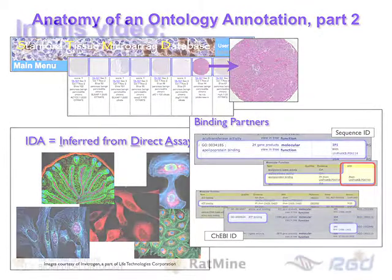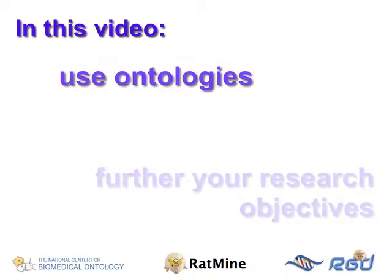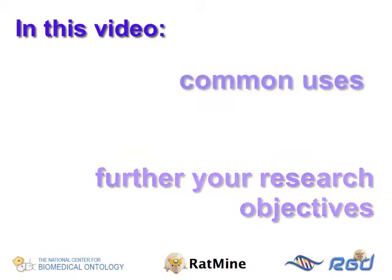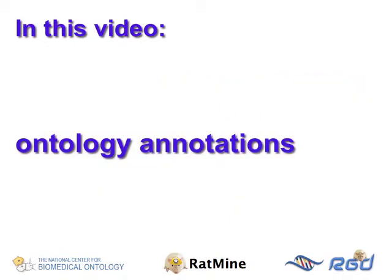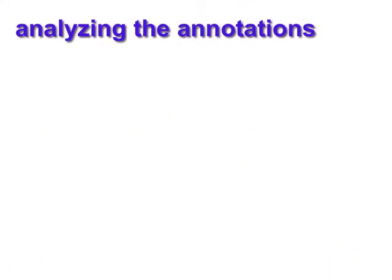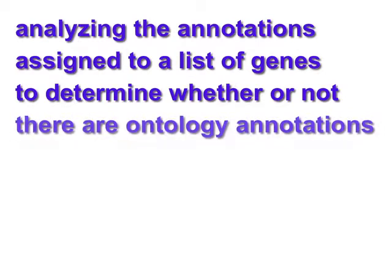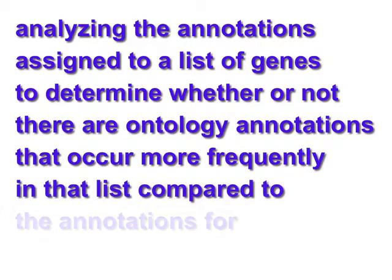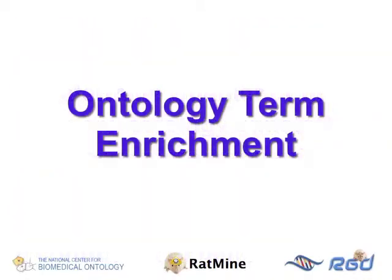In this video, we will begin to look at how you can use ontologies to further your research objectives. This video will introduce one of the common uses for ontology annotations: analyzing the annotations assigned to a list of genes to determine whether or not there are ontology annotations that occur more frequently in that list compared to the annotations for a control set of genes. This is referred to as ontology term enrichment.